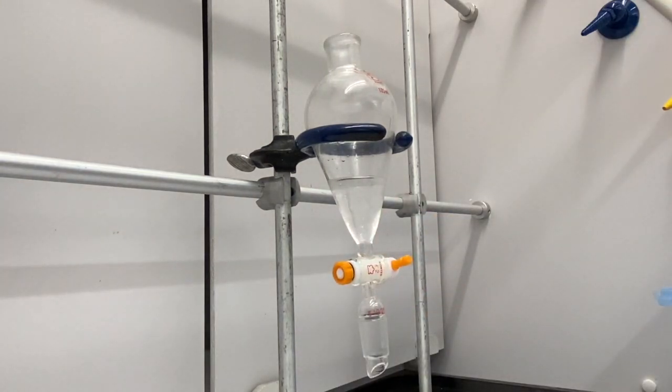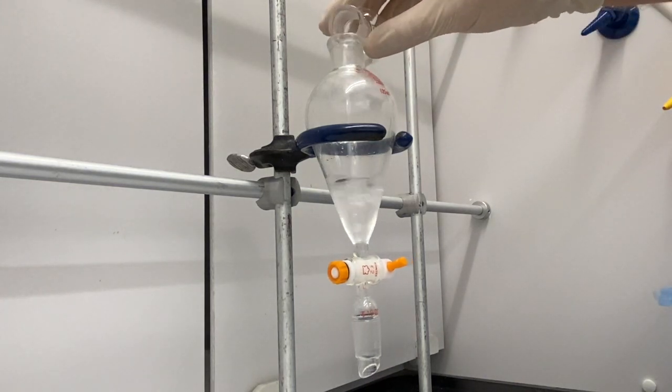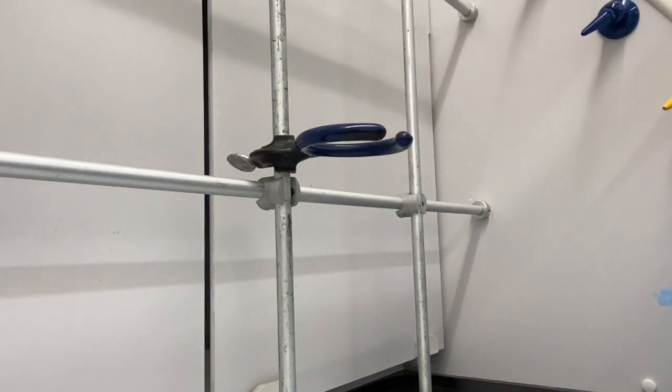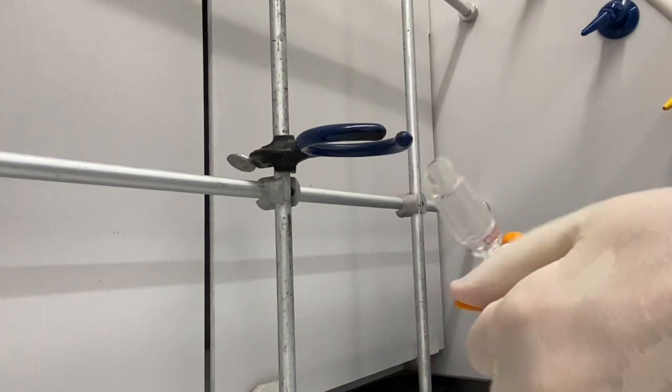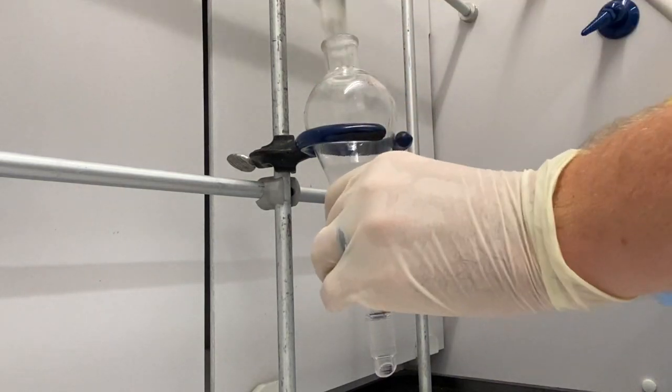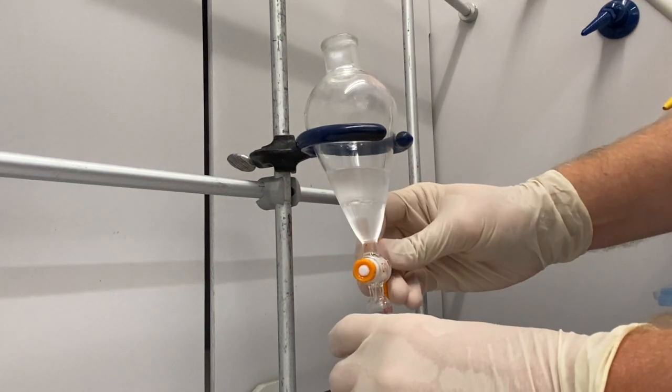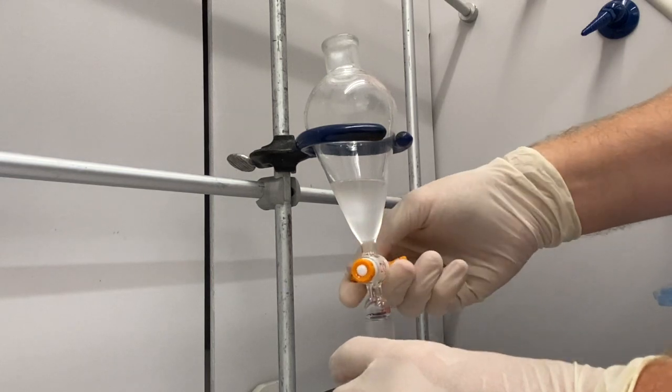There you go. So then we'll do the extraction again. I'm going to rinse out our flask, add that till I have a good layer, and then shake it up again. Vent, take off the cap, and let the layers separate. We'll drain out the bottom layer with that first extract that we had.